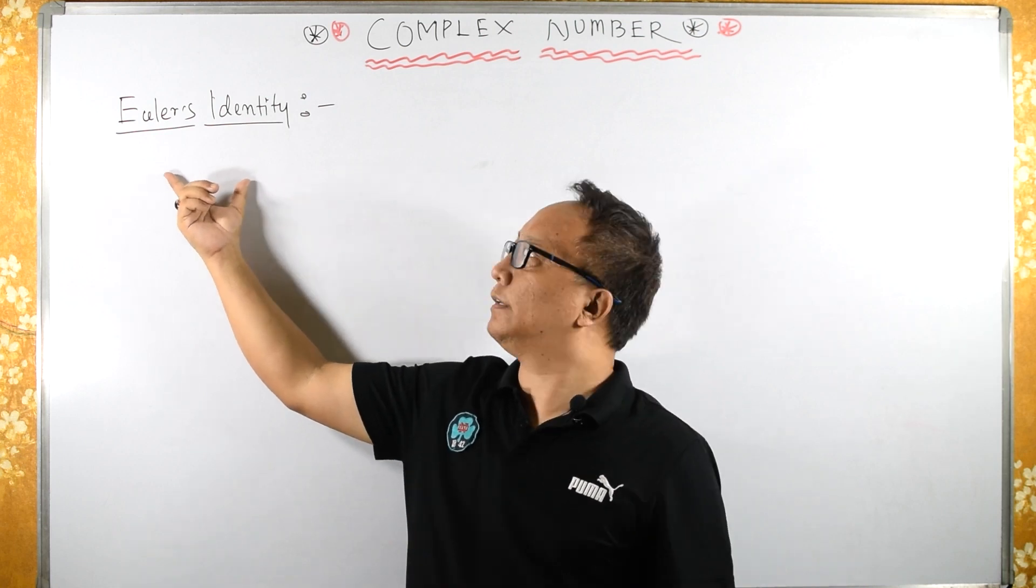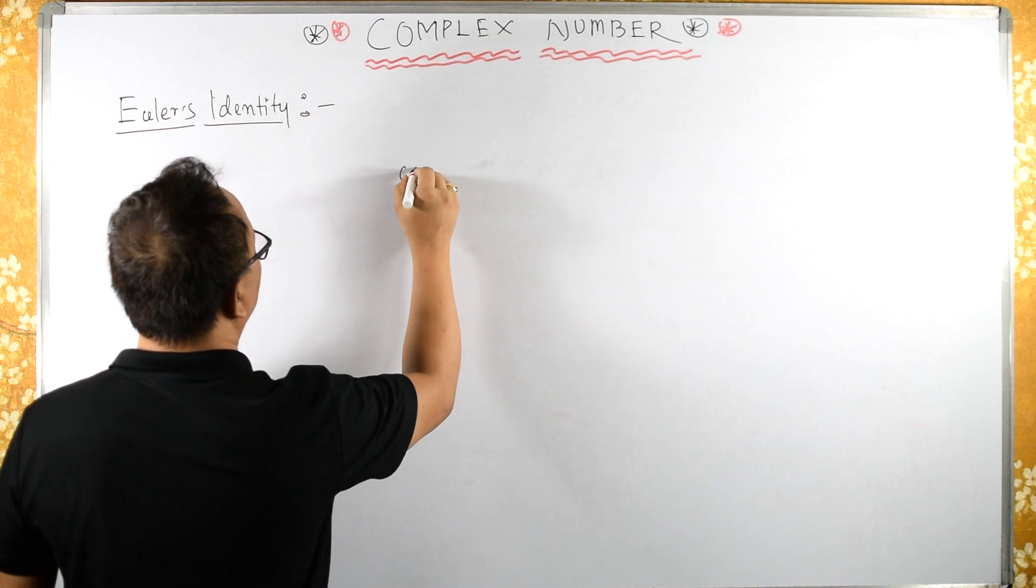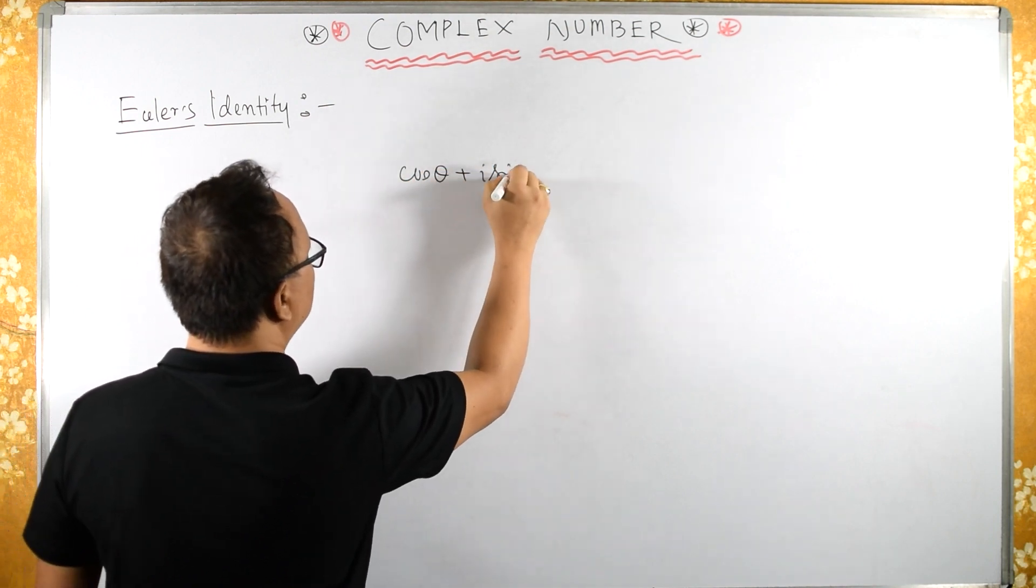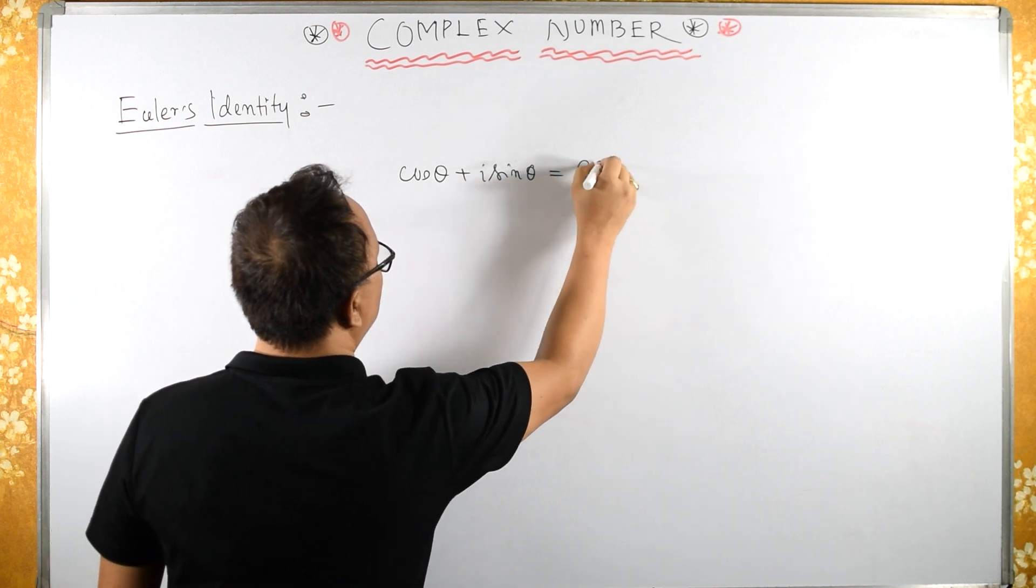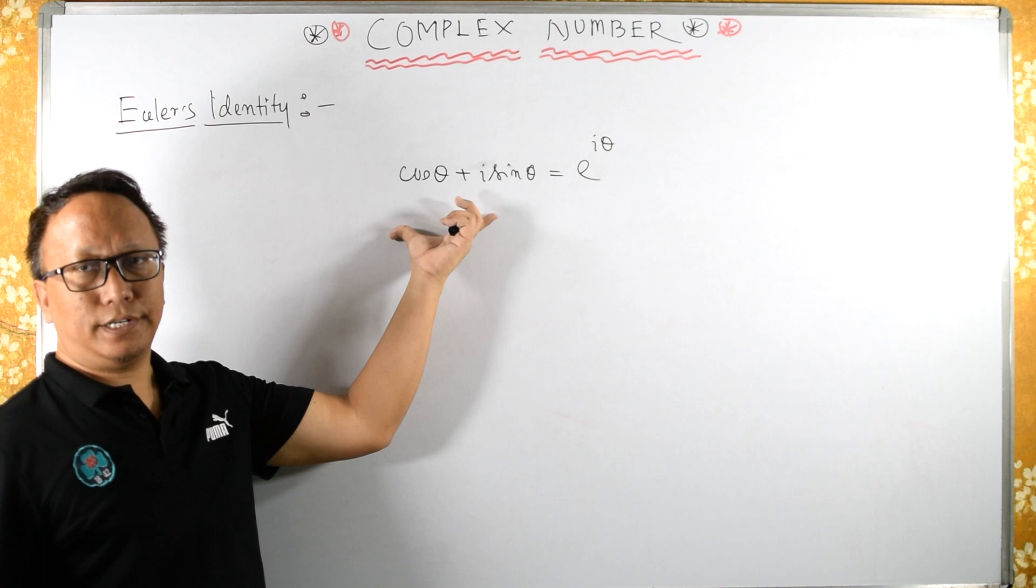What is Euler's identity? Euler's identity is when cos theta plus i sin theta is equal to e raised to i theta. This is called Euler's identity.